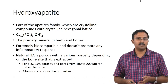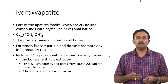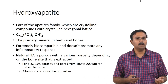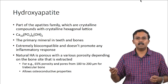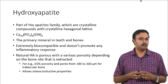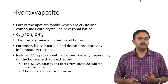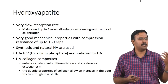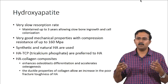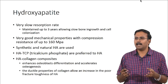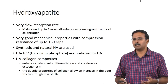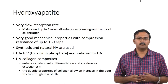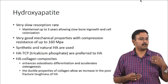You can have natural or synthetic hydroxyapatite. Natural hydroxyapatite is porous with varying porosity depending on the extraction source — from trabecular bone it has about 65% porosity with pores ranging from 100 to 200 micrometers, which helps in the osteoconductive property. Hydroxyapatite has a very slow resorption rate and can be maintained in the body for up to 3 years, allowing slow bone ingrowth and cell colonization. It integrates very nicely with the body, binding with bone to become part of the new bone. It has good mechanical properties with compressive stresses close to 160 MPa, though bone compressive stresses are usually 10 to 30 GPa.